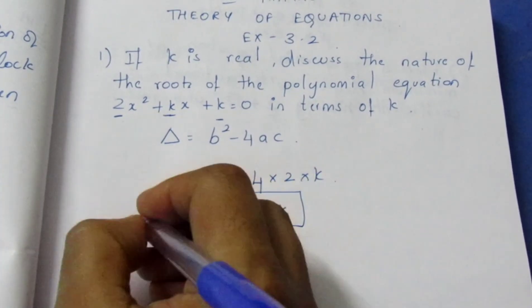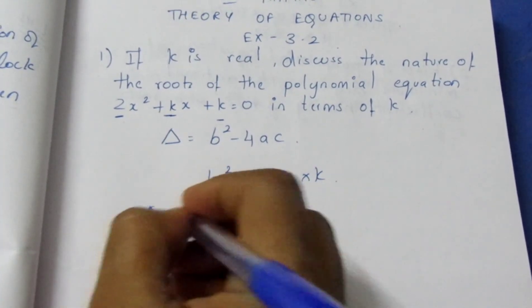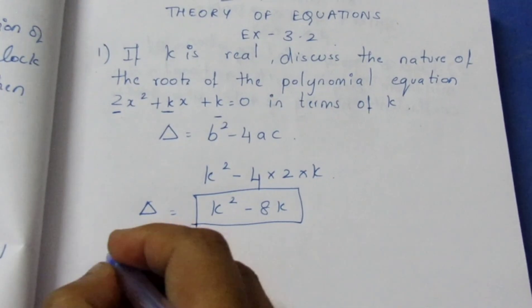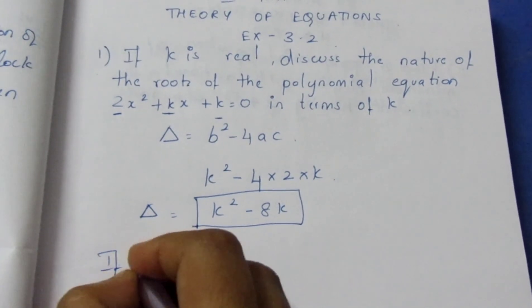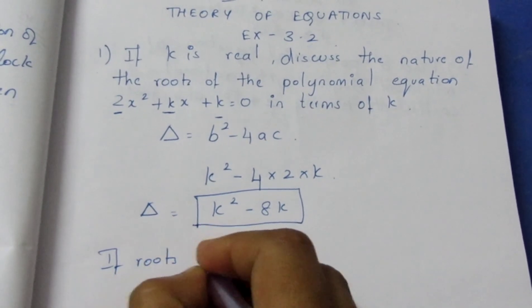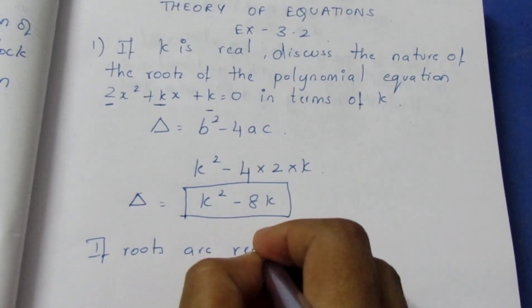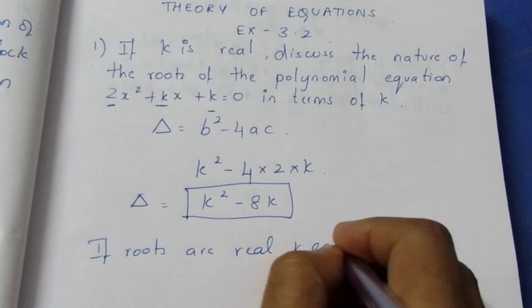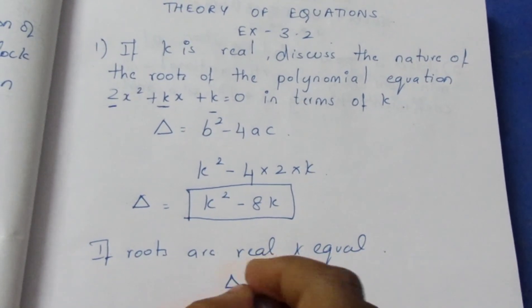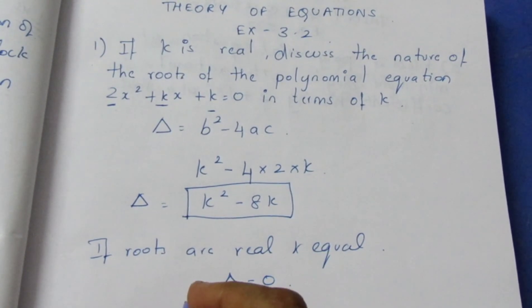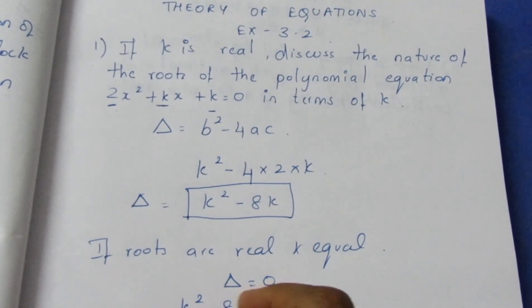Now we need to form this discriminant. For roots to be real and equal, discriminant equals 0. So we set k² minus 8k equal to 0.